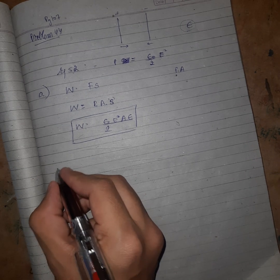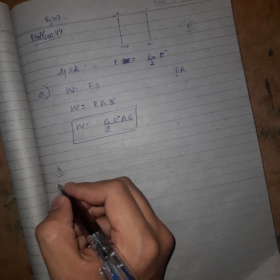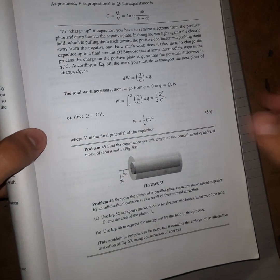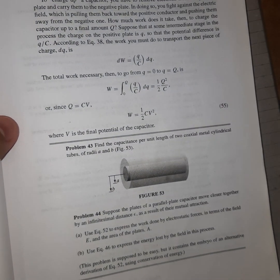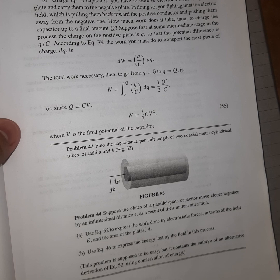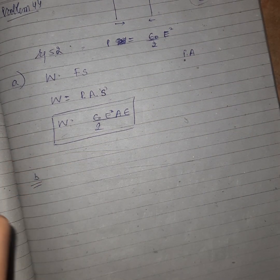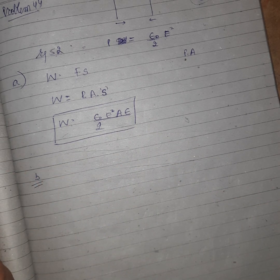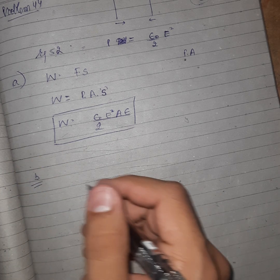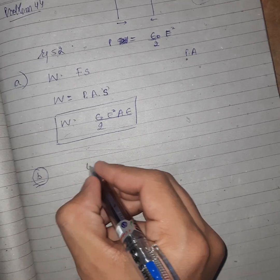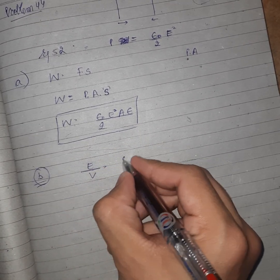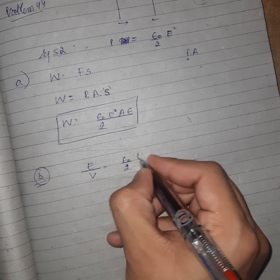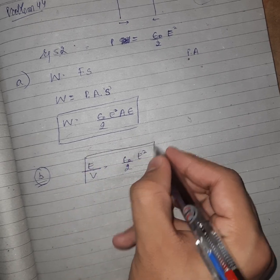Now let us solve part B. Part B says to use equation 46 to express the energy lost by the field in this process. Equation 46 gives energy per unit volume as ε₀/2 · E².